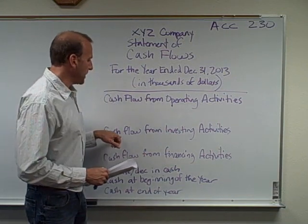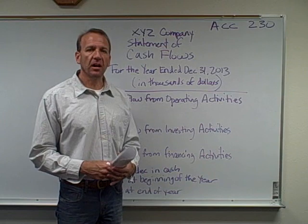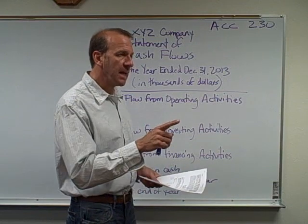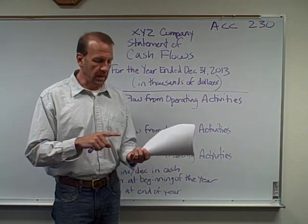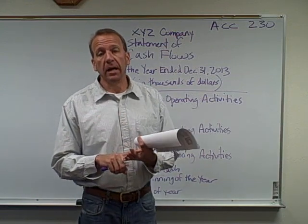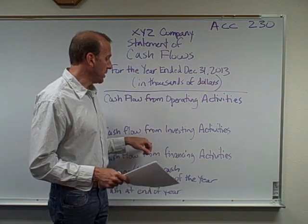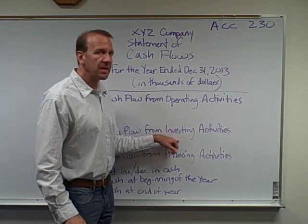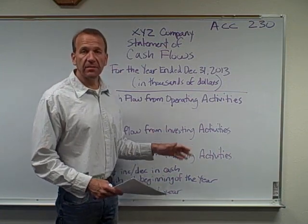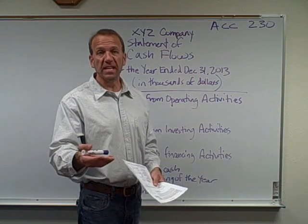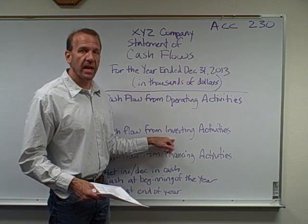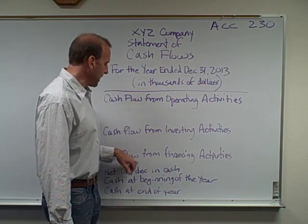The next section is cash flow from investing activities. These are investments we're making in the company — maybe stocks or bonds, but typically fixed assets. Equipment is a very common one; that's the example in our textbook. We're investing in something that's going to generate money in the future. It can be positive or negative: it's negative cash flow if we're purchasing equipment, but if we're later selling that equipment, it could be a positive cash flow.